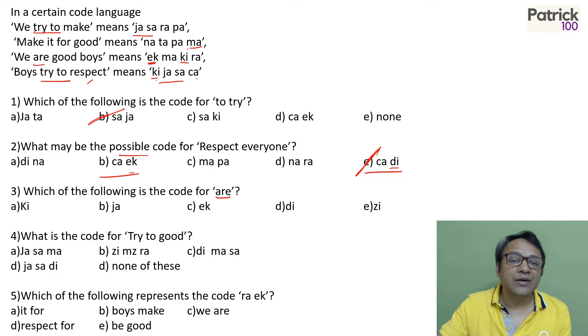MA is there in the second here. RA is there in the first. So you can make out EK is there for R. So R is EK. C option.